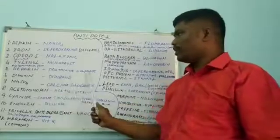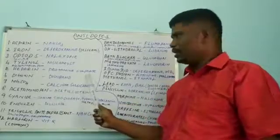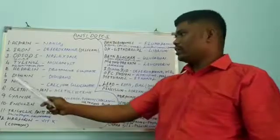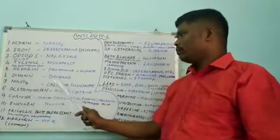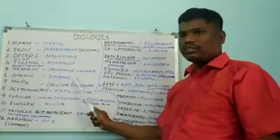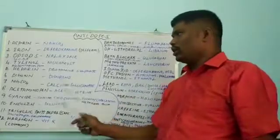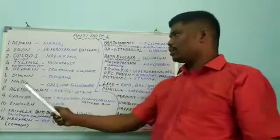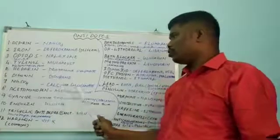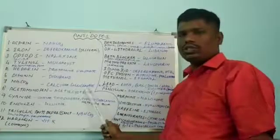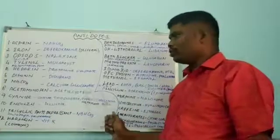In heparin overdose, protamine sulfate is used as an antidote. In digoxin overdose, Digibind is used as an antidote. In magnesium sulfate overdose, calcium gluconate is used as an antidote.